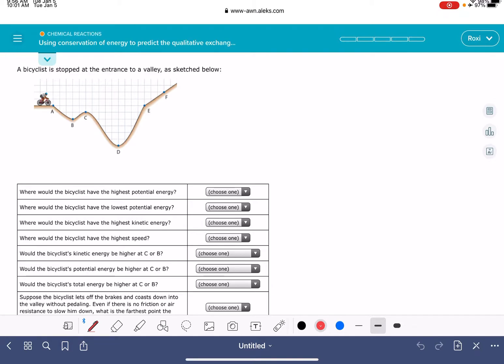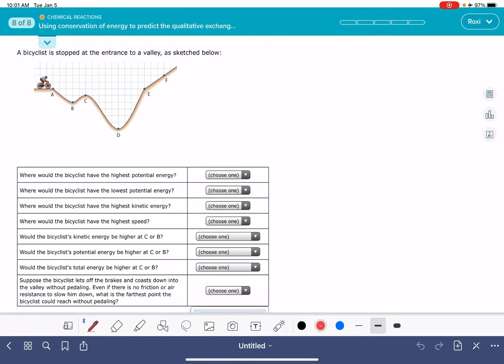So before we tackle this problem, there are just a couple of notes that I want you to keep in mind. In this problem, you're going to be asked about comparing potential energy, which I'm going to abbreviate PE, versus kinetic energy, KE.